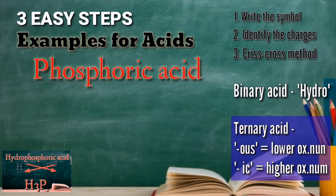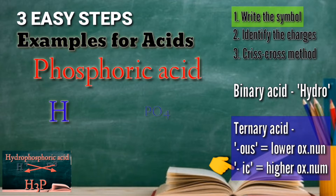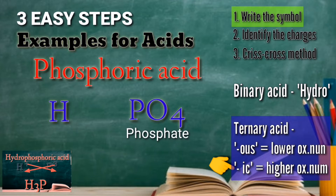Always remember: the suffix OUS is for the lower oxidation number and the suffix IC is for the higher oxidation number. For step 1, write the symbol. Hydrogen is written first to indicate it is an acid. The next is phosphoric, so we write PO4, which comes from phosphate — and phosphate has the higher oxidation number, which is why the suffix IC is used.